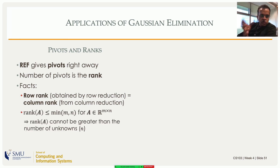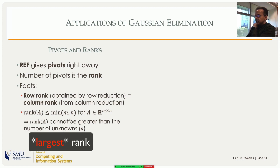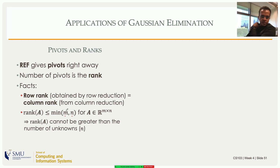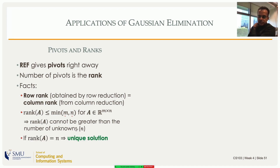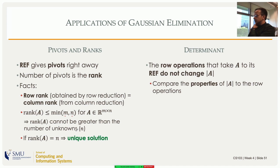Column reduction can be thought of as taking the matrix transpose and doing row operations. The rank is the minimum of the number of rows and the number of columns — number of columns is the number of variables, number of rows is the number of equations. So the rank of A cannot exceed the number of unknowns or the number of equations. If the rank equals the number of equations, you have a unique solution.